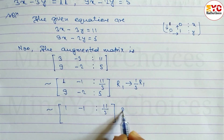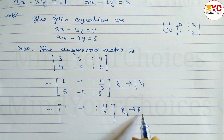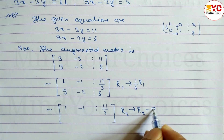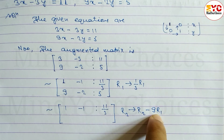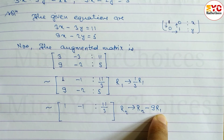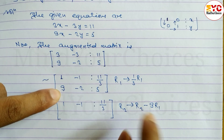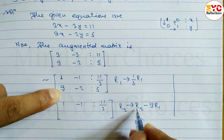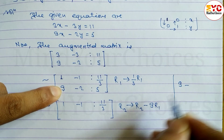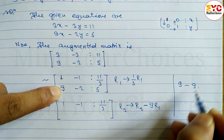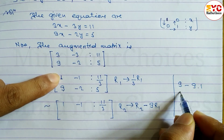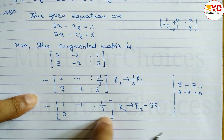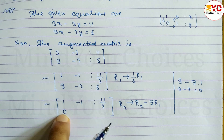Now for R2, we apply the operation R2 tends to R2 minus 9 times R1. In R2, we have 9, so we write 9 minus 9 into R1. R1's first entry is 1, so 9 minus 9 equals 0. So the first entry of the new R2 becomes 0.